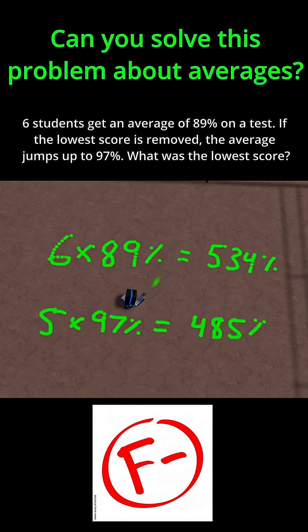How can I use this to solve the problem? Well, think about it. I just removed the lowest score from the test. When I remove the lowest score from the test, our sum goes from 534 to 485. Therefore, the lowest score is just the difference between those two sums. So let's just do 534 minus 485. And if you do that, this is equal to 49%.